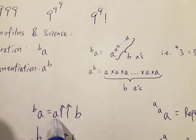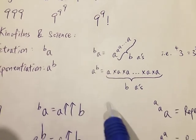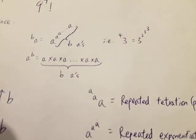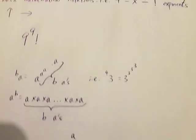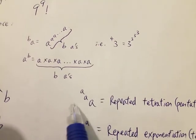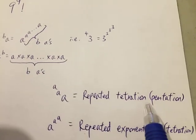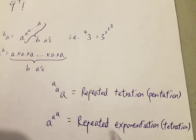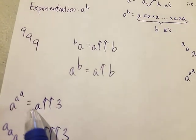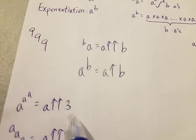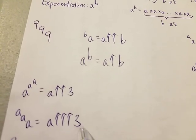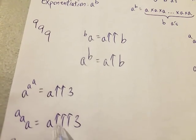We can write tetration as a double arrow b, so double arrow means tetration. Similarly, a to the power of b is just a arrow b. Since in this video we can use up to three digits, we can do something like a tetrated to a tetrated to a. What does this mean? It means repeated tetration, which we can call pentation. So a to the power of a to the power of a is repeated exponentiation, which is tetration, written as a double arrow 3. And a pentation to 3 is written as a triple arrow 3.